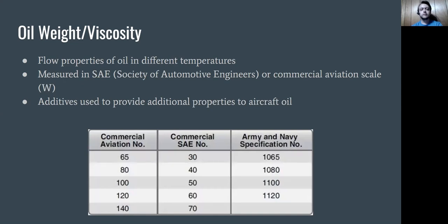Oil weight and viscosity is basically defined as the flow properties of oil at different temperatures. This is measured in SAE, which stands for Society of Automotive Engineers, or Commercial Aviation Scale, measured in W. Usually the W number in aviation is double the SAE number. In certain applications, additives are used to provide additional properties to aircraft oil. For the PA-44, it's recommended in the maintenance schedule to use an additive every oil change, along with the normal oil, to provide ashless dispersant properties.